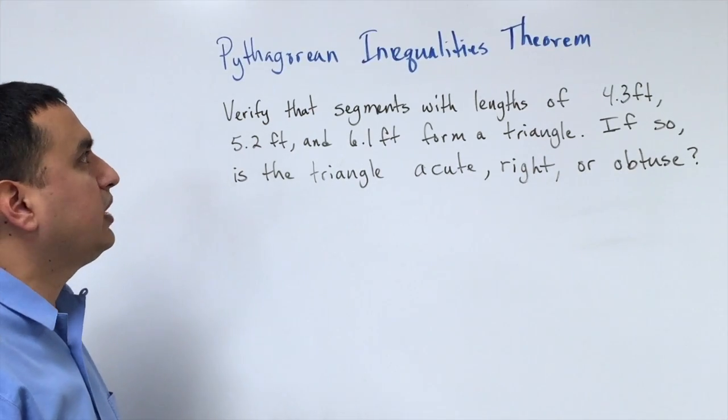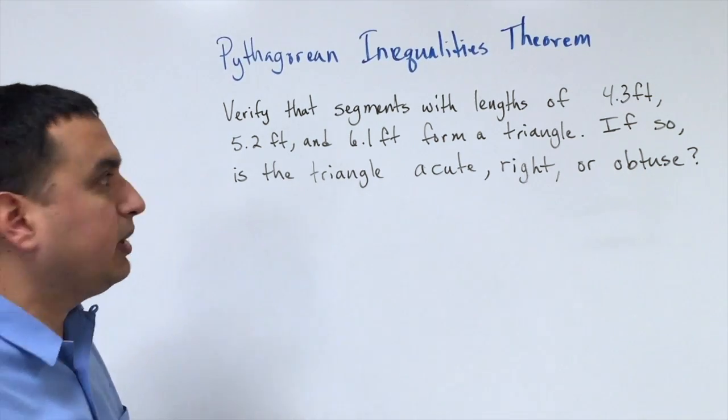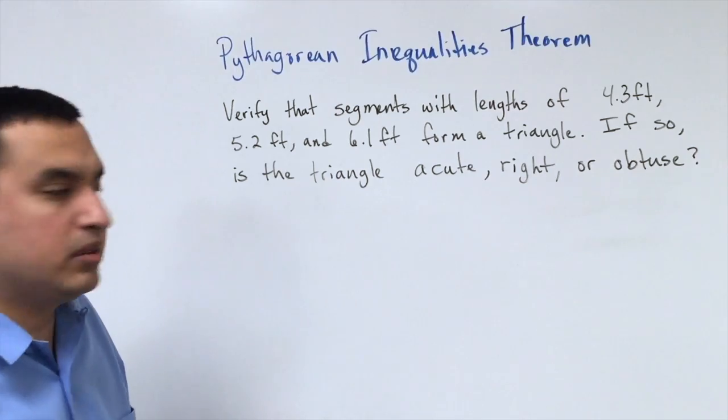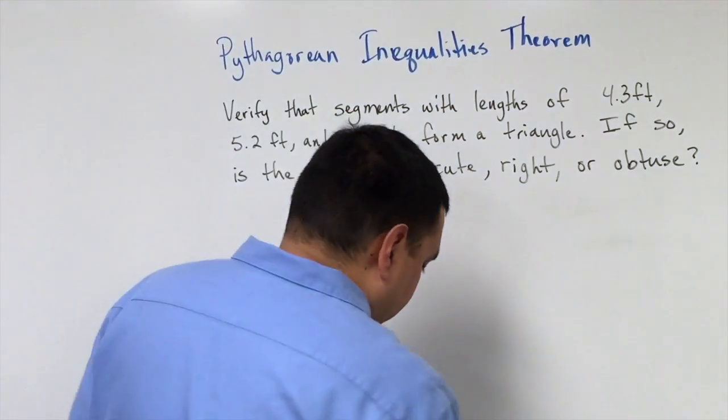Now I'm going to show you what's called the Pythagorean Inequality Theorem. That simply says that you can take some dimensions of a triangle and decide what kind of a triangle it's going to make. If it's going to be an acute, a right, or an obtuse triangle.